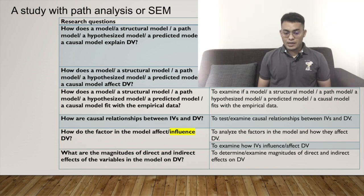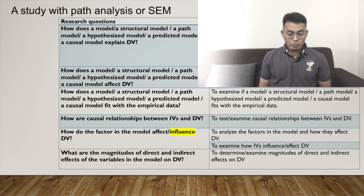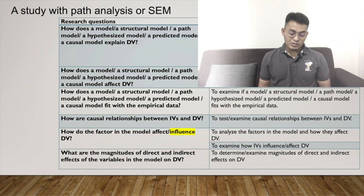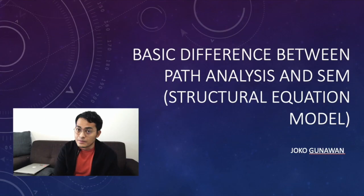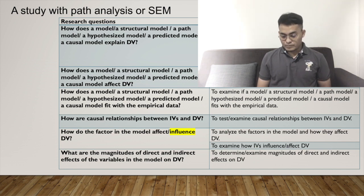Most likely in path analysis or SEM, we do not call them independent variables or dependent variables, but we call them exogenous variables and endogenous variables. You can differentiate them, but basically they are the same. For the fifth question: how do the factors in the model affect or influence dependent variable? The term 'influence' can be used in path analysis or SEM because path analysis is essentially multiple-multiple regression — the extended version of regression — so we can use 'influence' here.